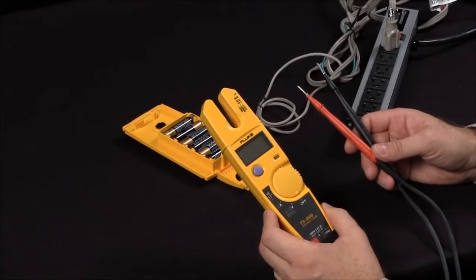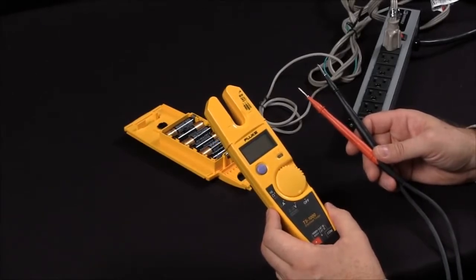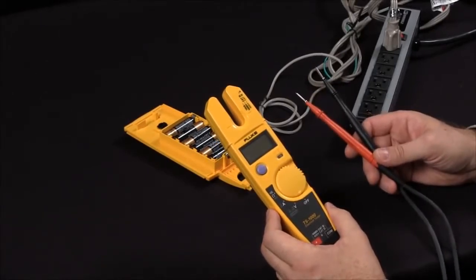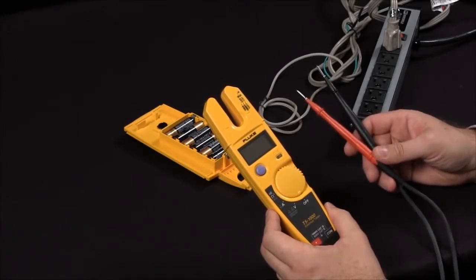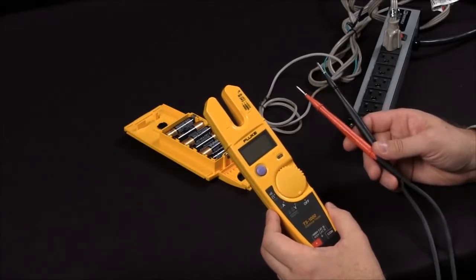Today, I will show you how to make measurements with the Fluke T5. This comes in two different styles. We have a T5-600, which measures up to 600 volts AC, and the T5-1000, which of course will measure up to 1000 volts AC.